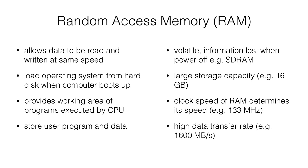Next, we have the random access memory, or simply called RAM. RAM is the main memory of the computer system, and it allows data to be read and written at the same speed.